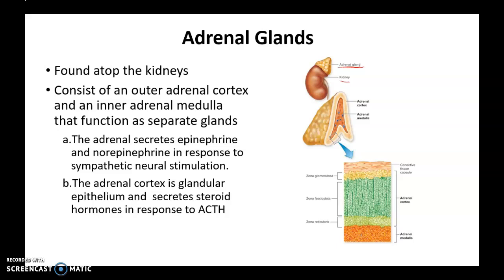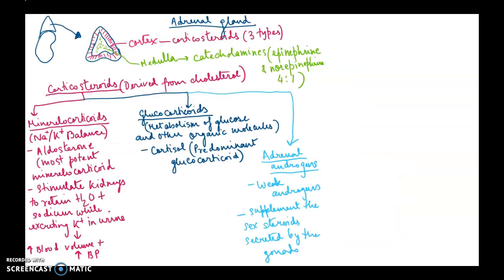Now the cortex secretes different hormones than the medulla, and we will zoom in and look at the secretions of adrenal cortex and medulla separately. We have the adrenal gland sitting on top of the kidney, and in a sagittal section you see the outer cortex and inner medulla. From the cortex, corticosteroids are released, and from the medulla, catecholamines like epinephrine and norepinephrine are released in the ratio of four to one.